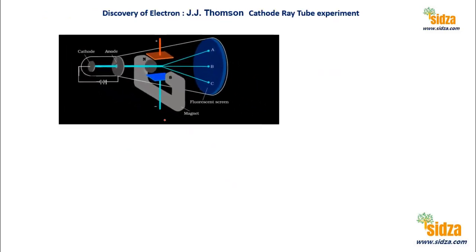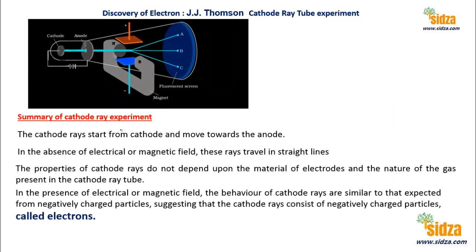To summarize: from the cathode ray experiments, it was concluded that cathode rays start from the cathode and move towards the anode, traveling in straight lines when no electric or magnetic field is applied. However, when electric and magnetic fields are applied, they get deflected. These properties show that cathode rays consist of negatively charged material particles, which are called electrons.